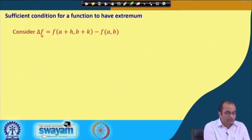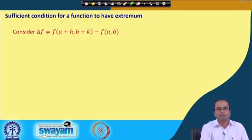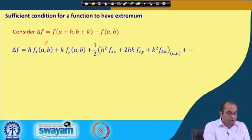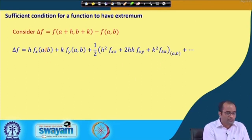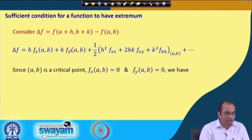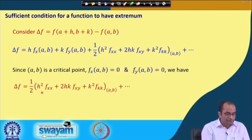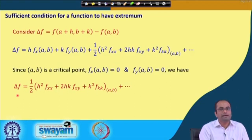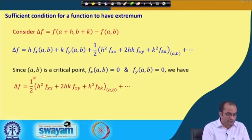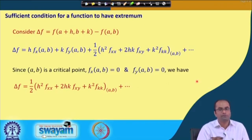Let us prove this result. We consider delta f, since we need to determine the sign of delta f to understand the behavior of f in the neighborhood of a point. Using the Taylor series expansion of f(a+h, b+k) around (a, b), we get first-order terms and second-order terms. Since (a, b) is a critical point, fx and fy at (a, b) vanish, and delta f equals the second-order terms: h²fxx + 2hk·fxy + k²fyy, plus higher-order terms.